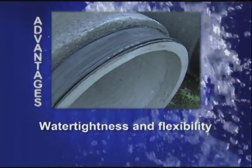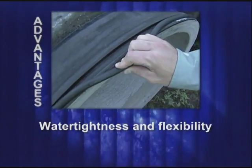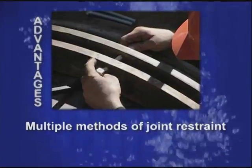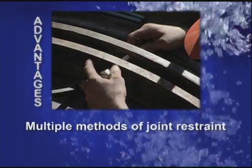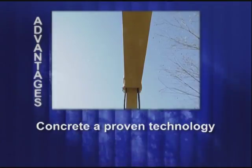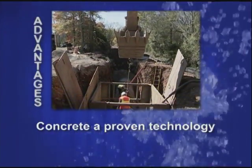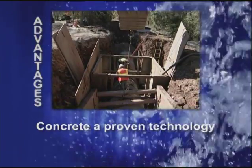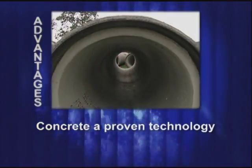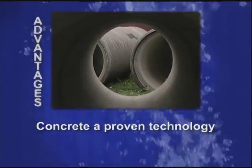The rubber gasketed joints provide water tightness and the flexibility to handle future pipe movement. Multiple methods for joint restraint are available, including field welded and mechanical style joints. Concrete pipe is a proven technology. According to the American Concrete Pressure Pipe Association, 90 of the 100 largest North American metropolitan areas use concrete pressure pipe in their water systems.